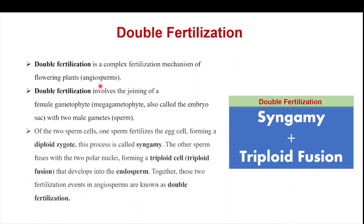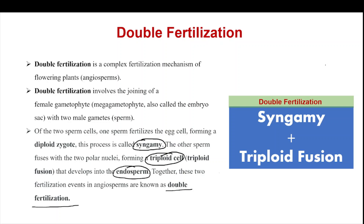Double fertilization involves the joining of the female gamete (embryo sac) with two male sperm cells. One sperm fertilizes the egg cell forming a diploid zygote — this process is called syngamy. The other sperm fuses with the two polar nuclei forming a triploid cell — this is known as triple fusion. Together, syngamy and triple fusion are known as double fertilization.